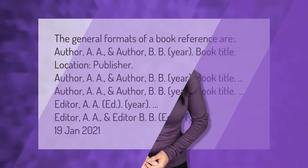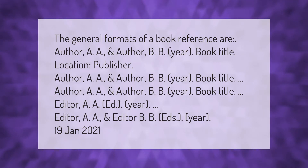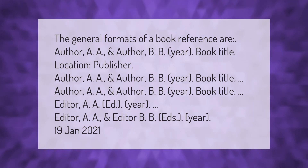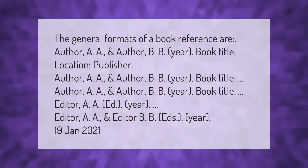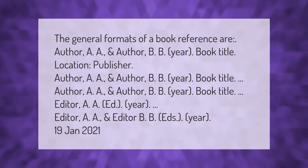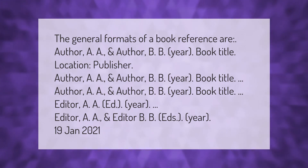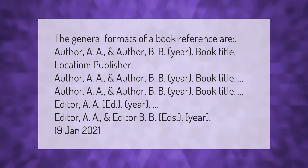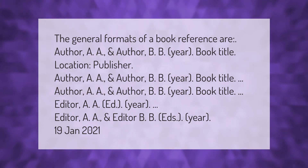The general formats of a book reference are: Author, A.A. and Author, B.B., year, book title, location, publisher. For edited works: Author, A.A. and Author, B.B., year, book title. Editor, A.A. (Ed.), year. Or: Editor, A.A. and Editor, B.B. (Eds.), year.